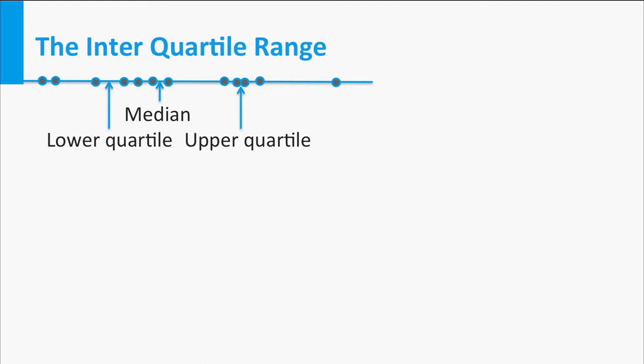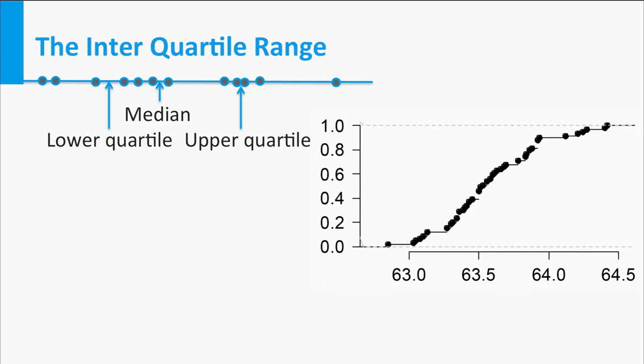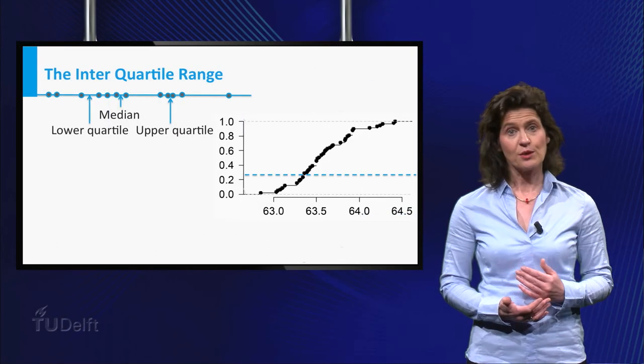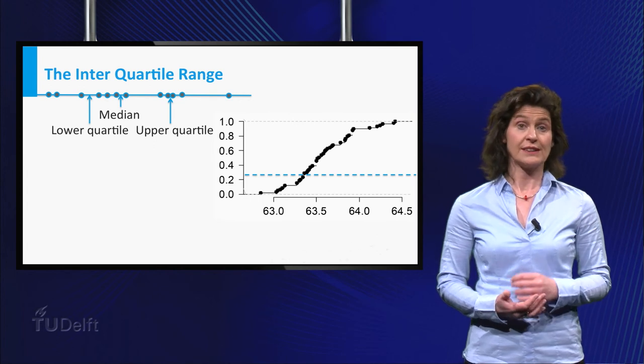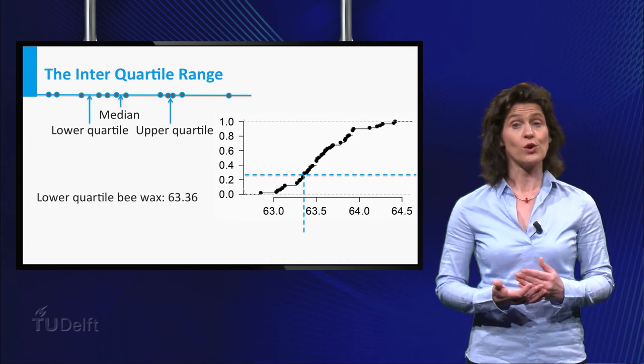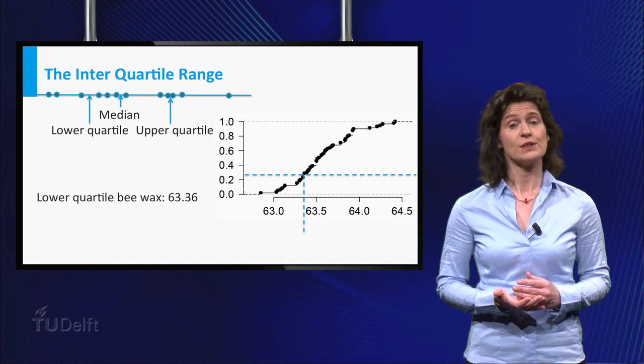Just as with the median in case of a dataset of even size, one has to make precise what the exact value of the quartiles is in case the dataset cannot be divided in four distinct parts easily. We will not go into that here. There is a natural connection of the quartiles with the empirical distribution function. This picture shows the empirical distribution function of 59 measured melting points of a natural bwax. Add a horizontal line at height 0.25 to this plot and check where it hits the empirical distribution function. The x-coordinate of this point is the lower quartile, in this case 63.36.